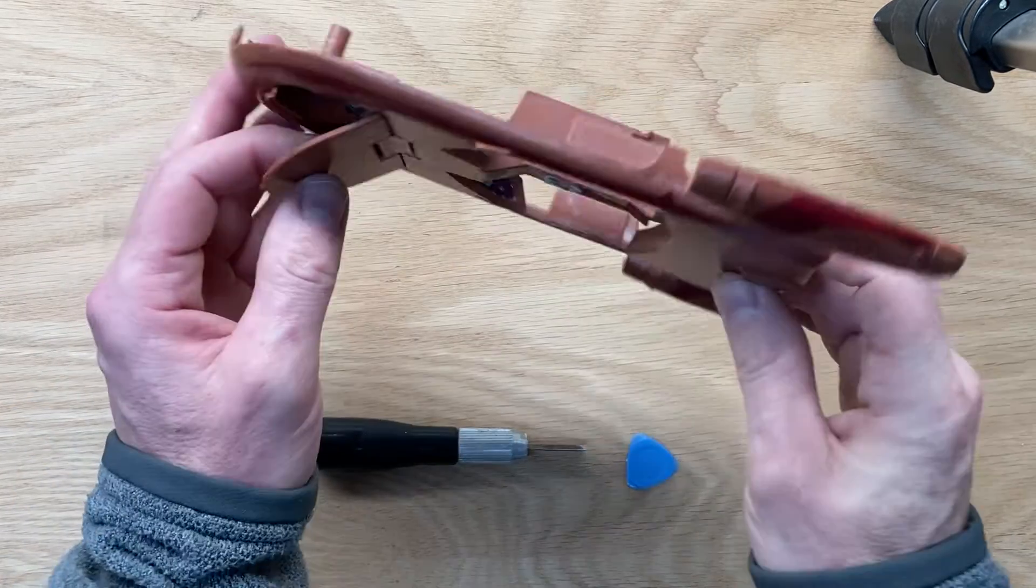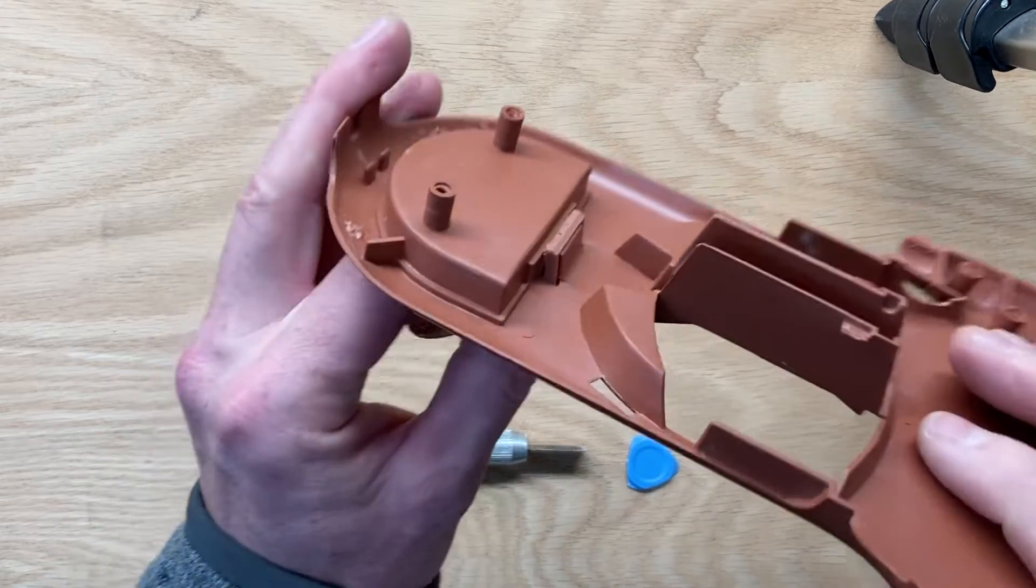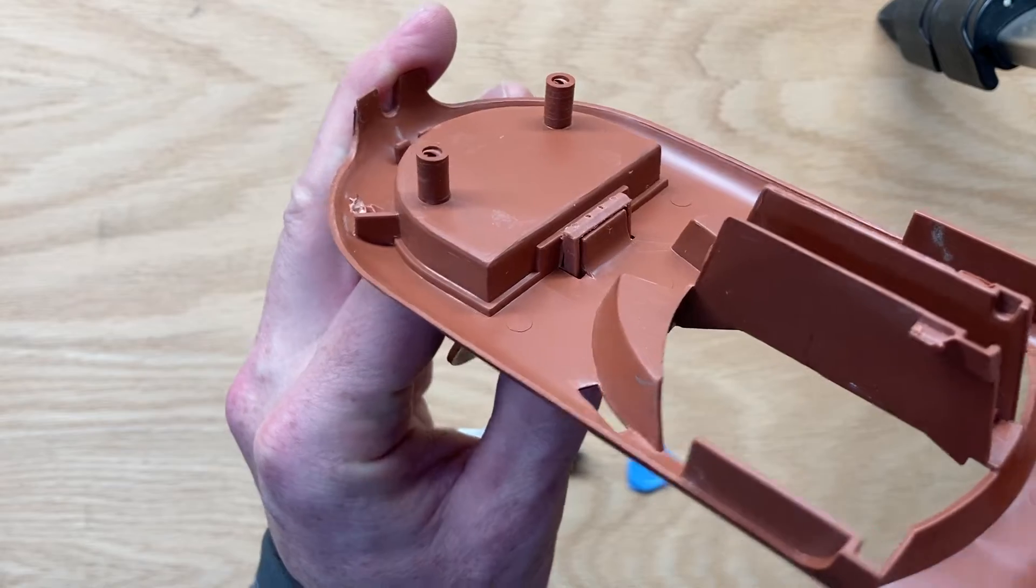Now the hood is held in place by this little plastic hinge that's locked into the main body by this little plastic tab.